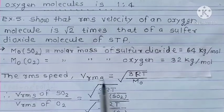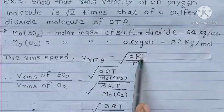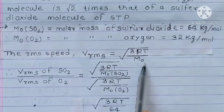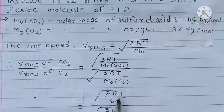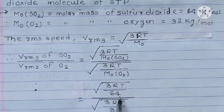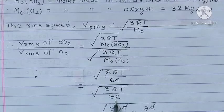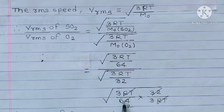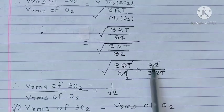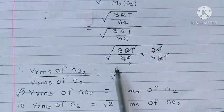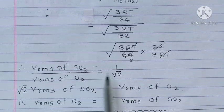Vrms of SO2 upon Vrms of O2 is equal to under root 3RT upon M0 for SO2 divided by under root 3RT upon M0 for O2. 3RT cut, M0 SO2 is 64, M0 O2 is 32. So we get 1 upon root 2. Vrms of SO2 upon Vrms of O2 is equal to 1 upon root 2.